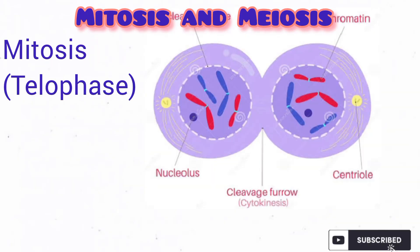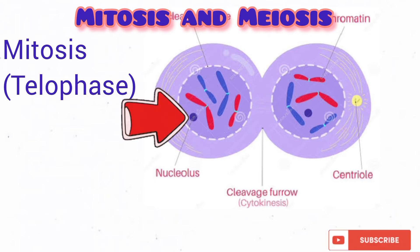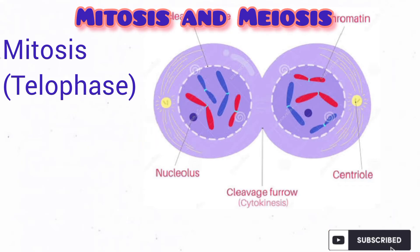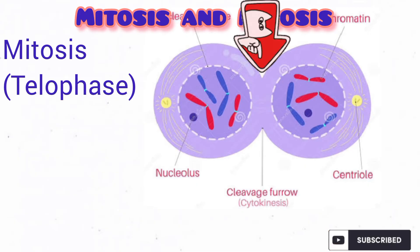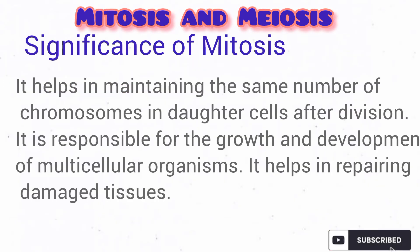Telophase is like the opposite of prophase: the nuclear membrane that disappeared during prophase reappears, the nucleolus that disappeared also reappears, and the chromosomes become thin and long again through decondensation. The mitotic spindle fibres also disappear during this stage, and there is initiation of cytokinesis by the formation of a cleavage furrow, as seen in the diagram. Mitosis is essential for growth and for the repair of worn-out tissues.